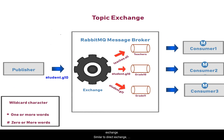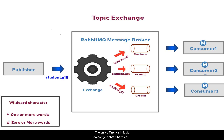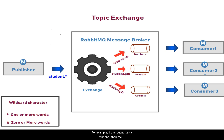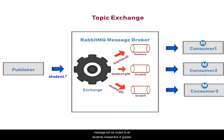The next exchange type is topic exchange. Similar to direct exchange, topic exchange also uses routing key and binding key to route messages. The only difference is that topic exchange can handle wildcard characters in the routing key. The characters used here are star (*) and hash (#). Star matches one or more words in a routing key, and hash matches zero or more words. For example, if the routing key is 'student.*', the message will be routed to all students irrespective of their grades.